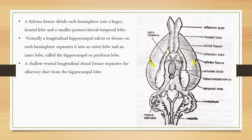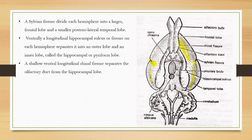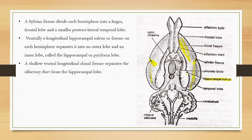The Sylvian fissure divides the cerebrum into the frontal lobe and the posterior temporal lobe. On each hemisphere, right and left, there is a hippocampal sulcus or fissure which separates an outer lobe and an inner lobe called the hippocampal or pyriform lobe.